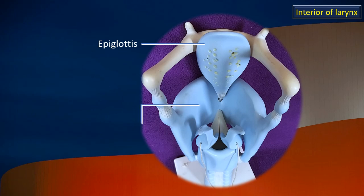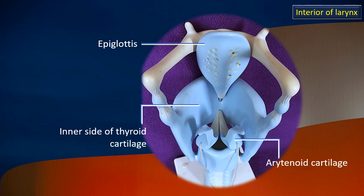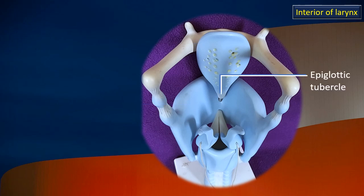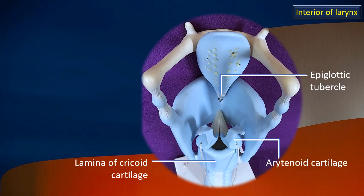Now let's see — epiglottis, inner aspect of the thyroid cartilage, arytenoid cartilage. The lower part of the epiglottis is called the epiglottis tubercle. Further down, it is attached to the thyroid but there is a joint formation there. That is the lamina of the cricoid cartilage. The arrow is right on the posterior median ridge, and that is the arytenoid cartilage.